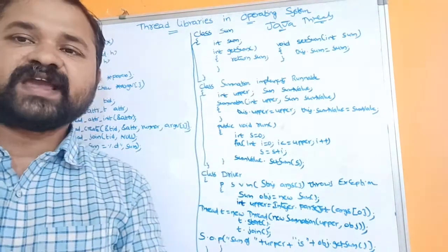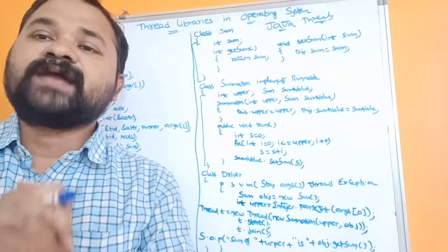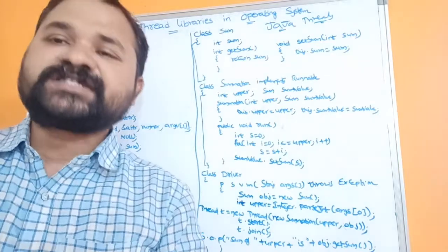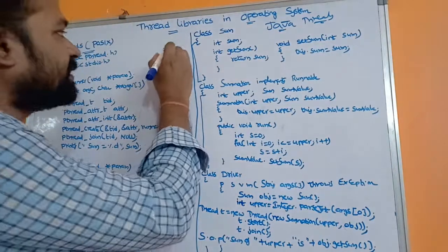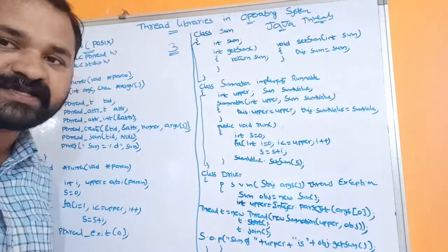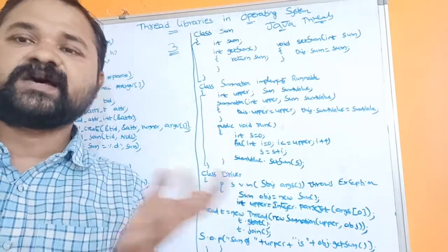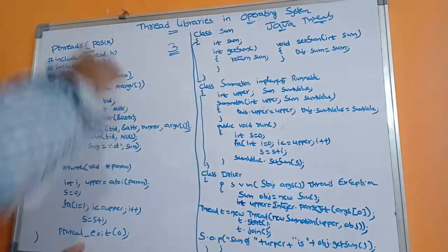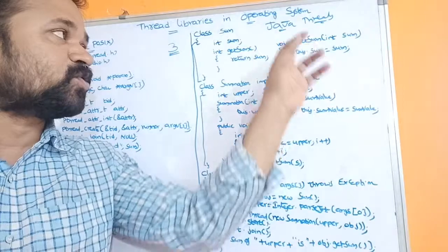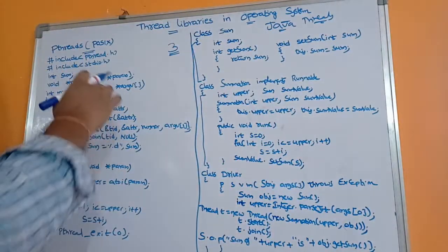We will write a thread program to calculate the sum of the first N natural numbers. For example, if the number is three, then the sum of the first three numbers — one plus two plus three — equals six. We will write a C program using pthreads and a Java program using Java threads.